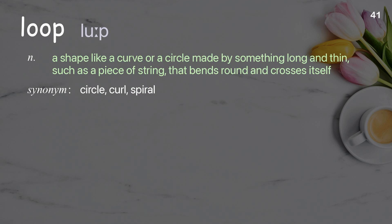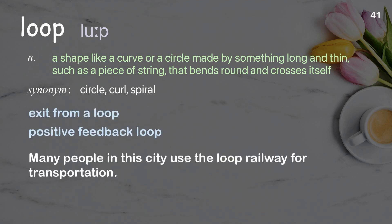Loop: A shape like a curve or a circle made by something long and thin, such as a piece of string, that bends round and crosses itself. Examples: Exit from a loop. Positive feedback loop. Many people in this city use the loop railway for transportation.